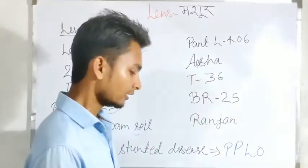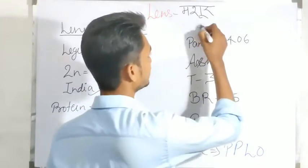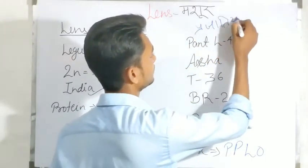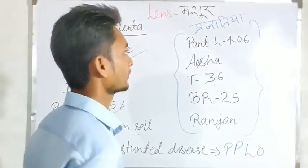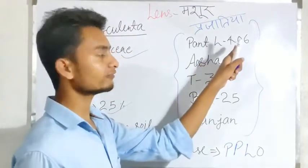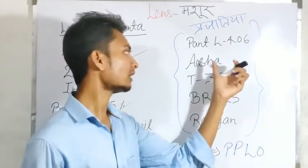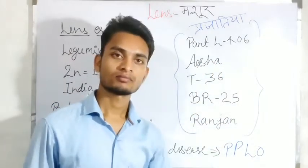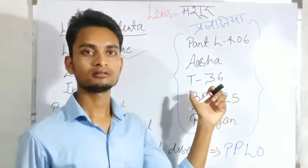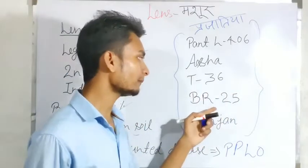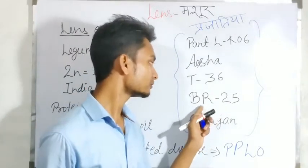Now coming to varieties — the important varieties of lens are: 406, Asha, T-36, and YE-226.